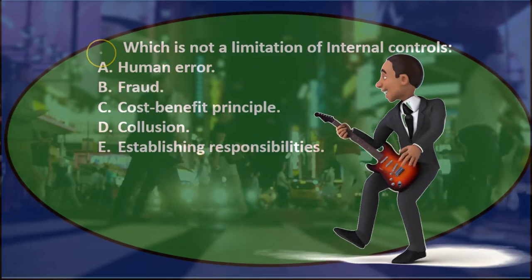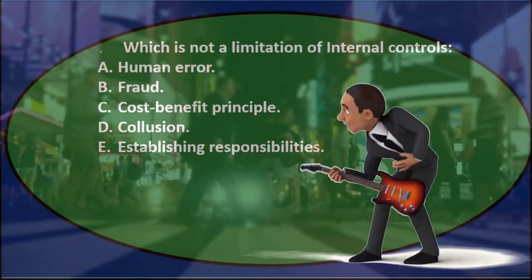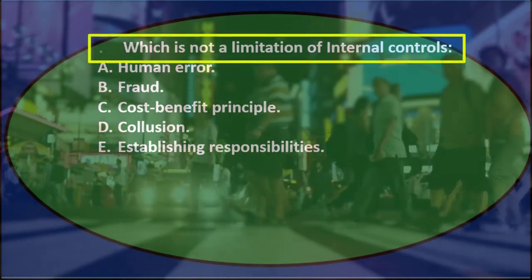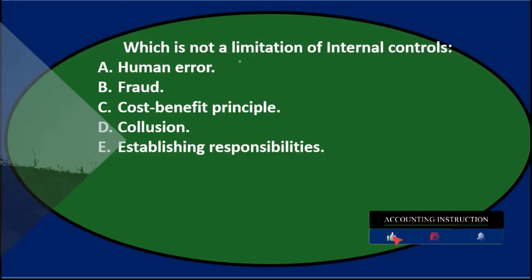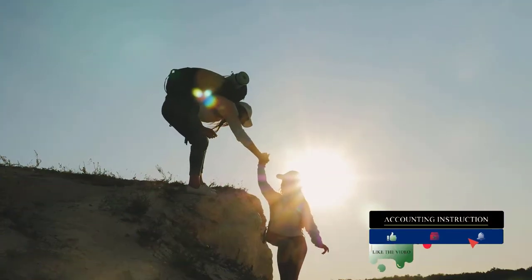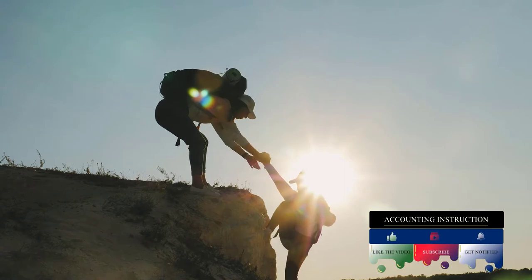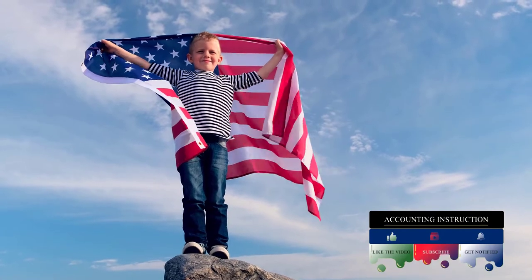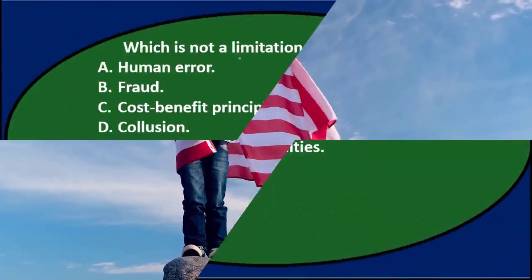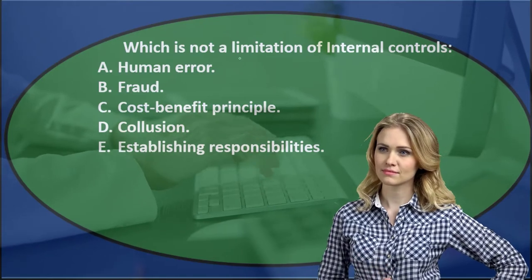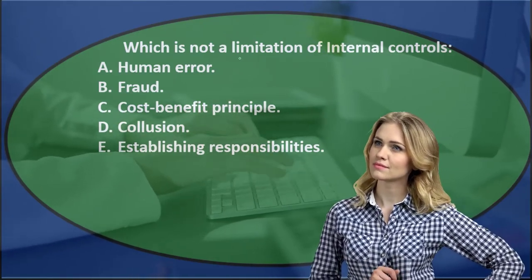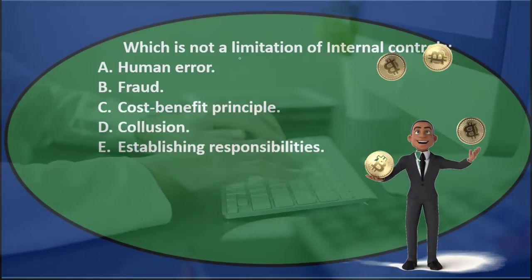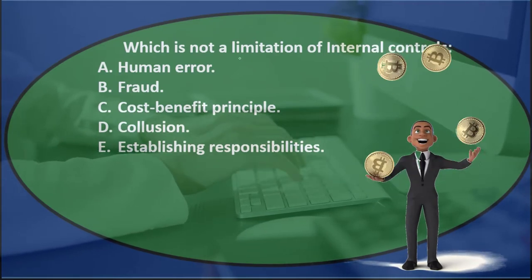We'll read through this and use the process of elimination. Internal controls are those procedures that help us achieve goals like safeguarding assets, being in compliance with policies, laws, and making accurate records. Any internal control has problems — there's no perfect system, so there's never a guarantee from internal controls.